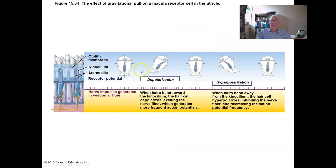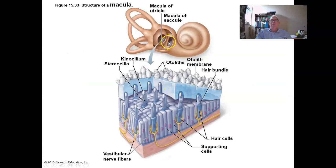Here's a macula in the horizontal position with tonic activity in the attached neurons. If we tip the head one way, it causes depolarization of the stereocilia and kinocilium, increasing the frequency of action potentials. If we tilt the head the opposite way, it causes hyperpolarization and a reduction in impulse frequency. By the action of these macula, you can appreciate the position of your head and body — that's called static equilibrium. There are two perpendicularly arranged macula so that whether you're lying down or standing up, you can still appreciate the position of your head.